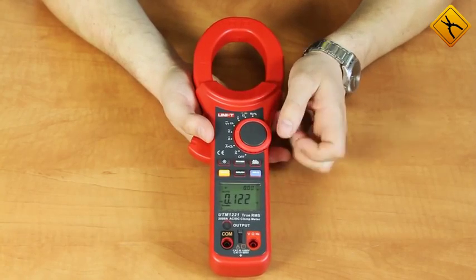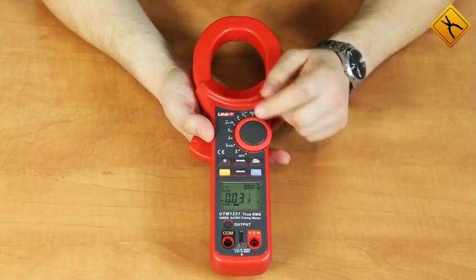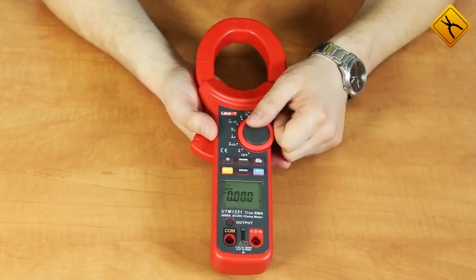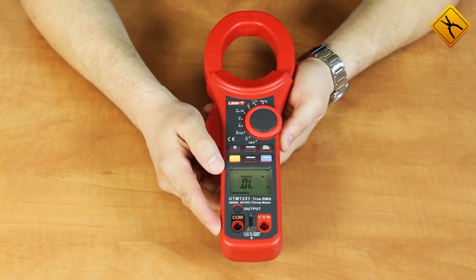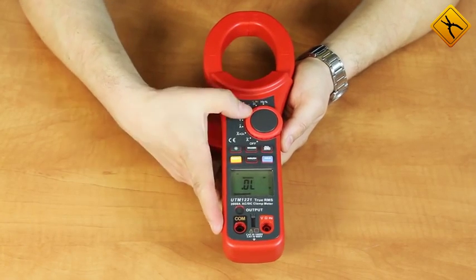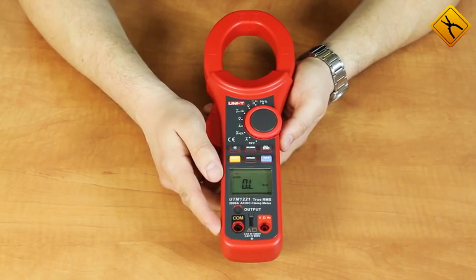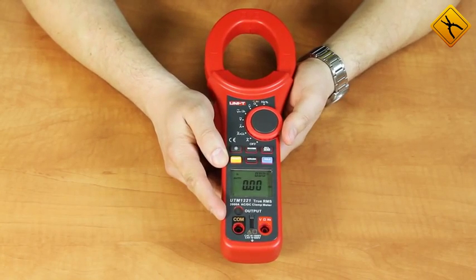AC voltage, AC voltage with low frequency filter, DC voltage, resistance. Use the select button to switch between the diode test function and the continuity buzzer, and back to resistance measurement. Frequency measurement.